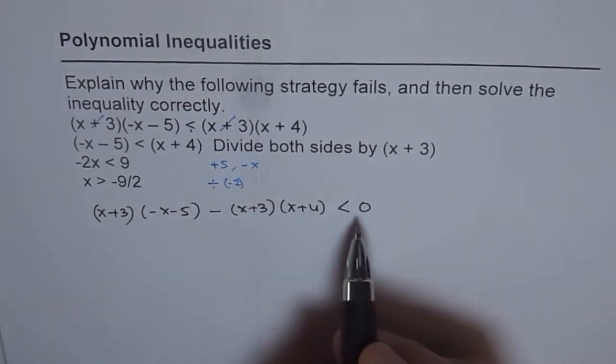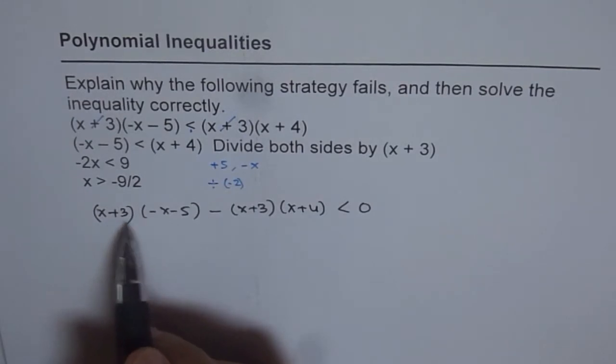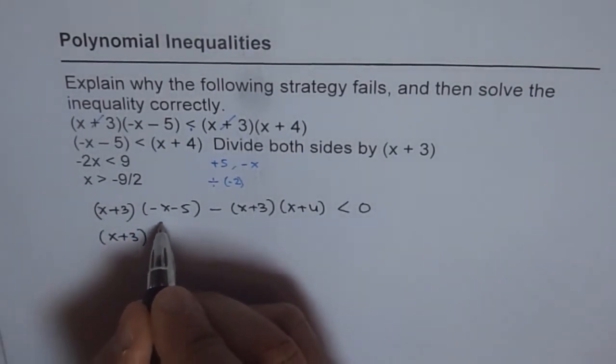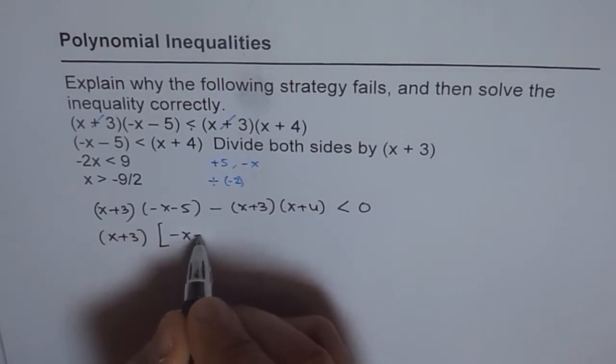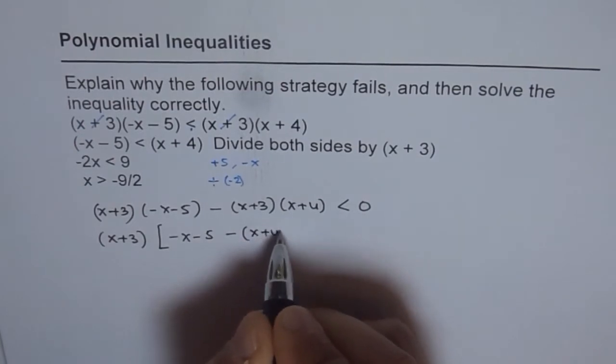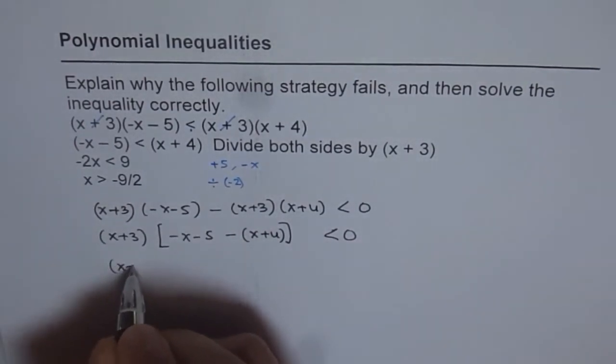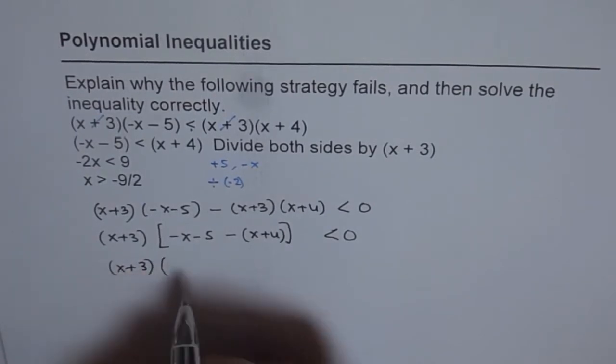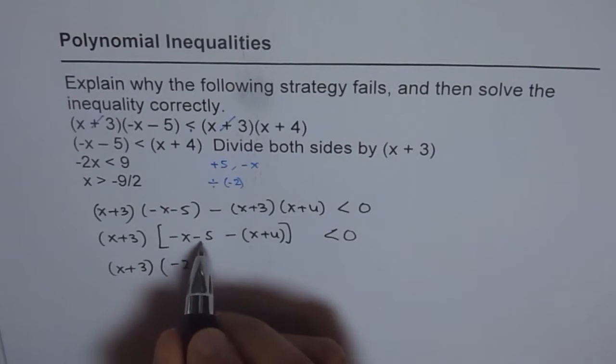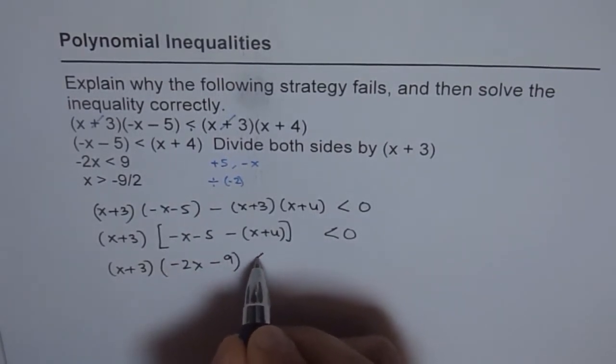It's a good idea to always keep 0 on one side and then solve for inequalities. Now you can take x plus 3 common. So it is x plus 3 common. And you get here minus x minus 5 and minus of this part, which is x plus 4, less than 0. So that gives us x plus 3 times minus x minus x is minus 2x, and minus 5 and minus 4 is minus 9, which is less than 0.